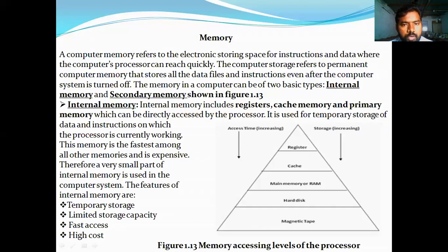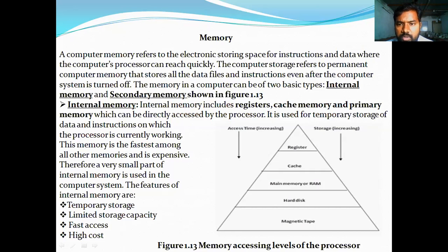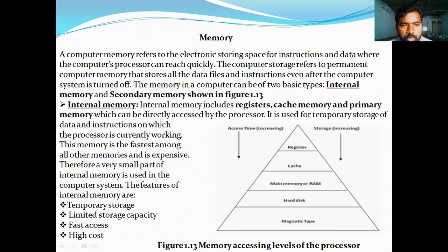As per the block diagram of a computer, we come to know that there are two types of memory — internal memory and secondary memory. Before going into internal memory and secondary memory, first we need to know what exactly memory is. Memory is nothing but electronic storing space for instructions and data where the computer processor can reach quickly. Computer storage refers to permanent computer memory that stores all data files and instructions even after the computer system is turned off.